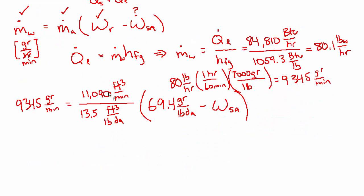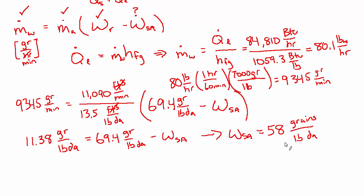And now we have an algebra problem. So we can divide this, we'll get rid of cubic feet, this will become pounds per minute, and then we divide the 9,345 by that. We end up with 11.38 and that now has units of grains per pound of dry air, equals 69.4 grains per pound of dry air minus the humidity ratio of the supply air. And then we can rearrange and solve for the humidity of the supply air: 58 grains per pound of dry air. And just in case you were preferring to work on this problem in pounds of water instead of grains, it's simply multiplying or dividing by 7000. But for your reference it's 0.0083 pounds of water per pound of dry air, and that is answer B.